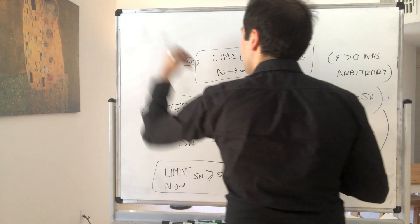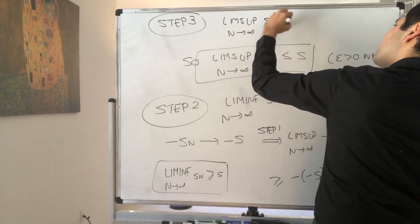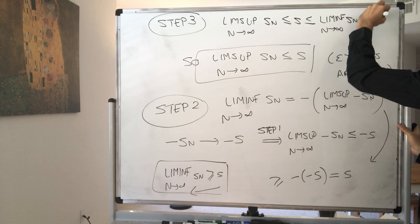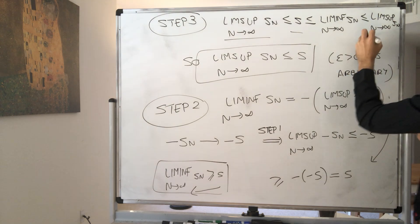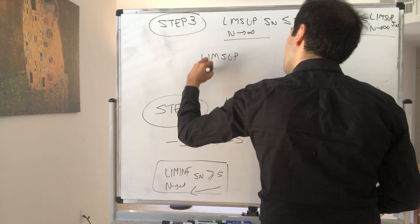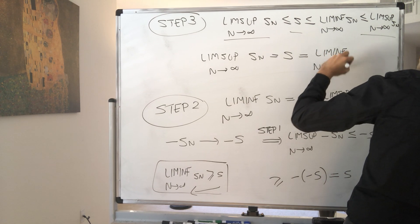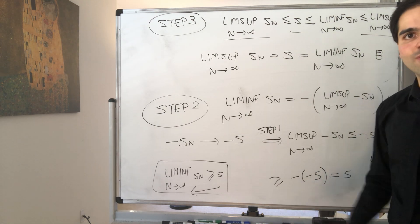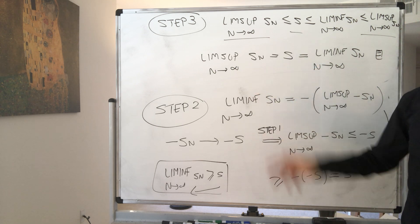Step three. We know the lim sup of Sn is less than or equal to S, which is less than or equal to the lim inf of Sn. But lim inf is always smaller than the lim sup of Sn. Therefore the lim sup is less than or equal to S is less than or equal to the lim sup, so the lim sup has to equal S. Similarly, the lim inf also equals S. So if Sn converges to S, the lim sup and lim inf both have to equal S. The same result also holds for S equals infinity or minus infinity, but with a different proof. Thank you very much.